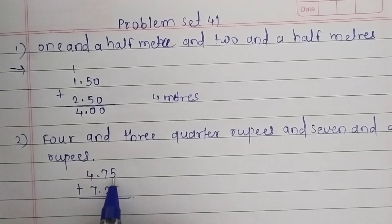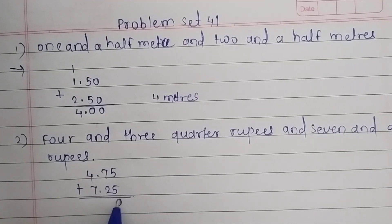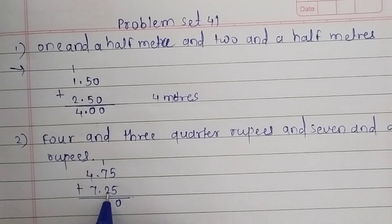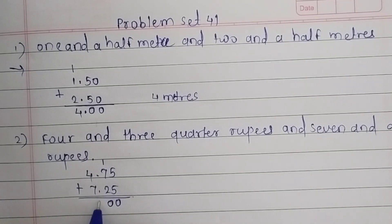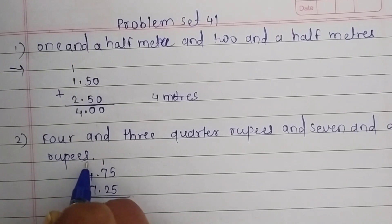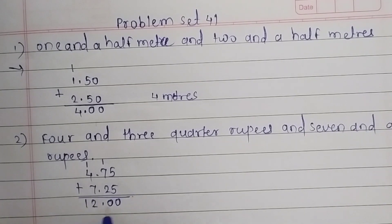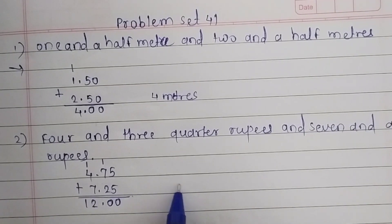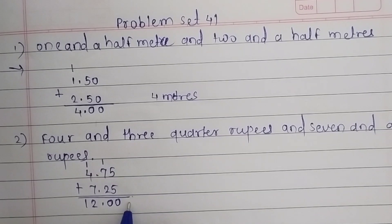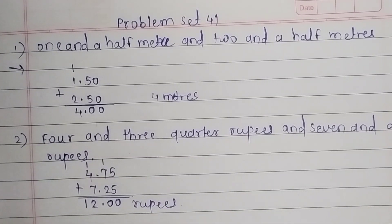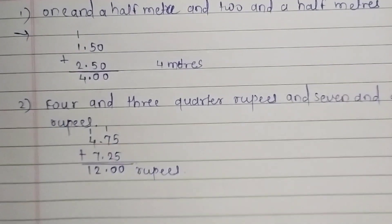Let's add them. 5 plus 5 is 10, carry 1. 7 plus 2 is 9, plus 1 carried is 10 — write 0, carry 1, and place the decimal point. 7 plus 4 is 11, plus 1 is 12. The answer is 12 rupees, written as 12.00.